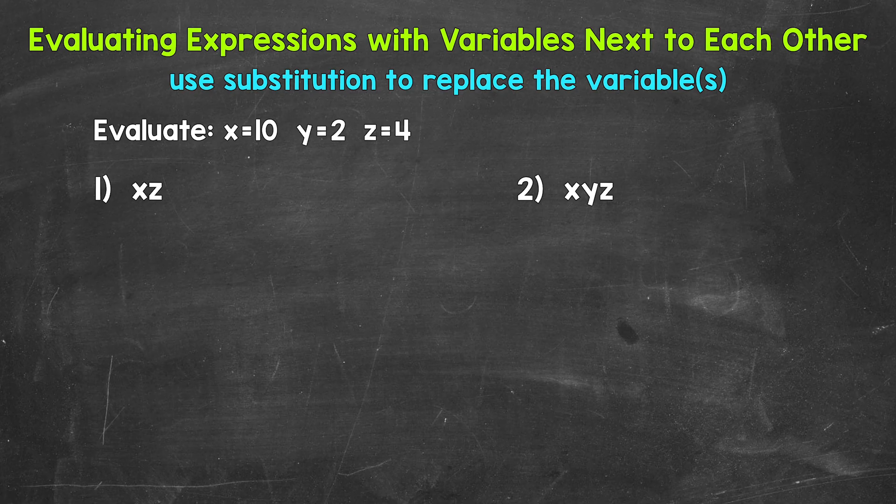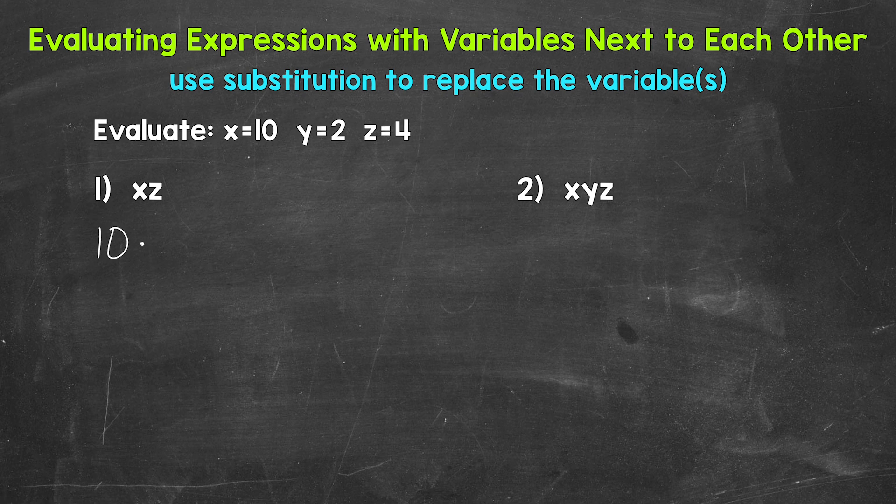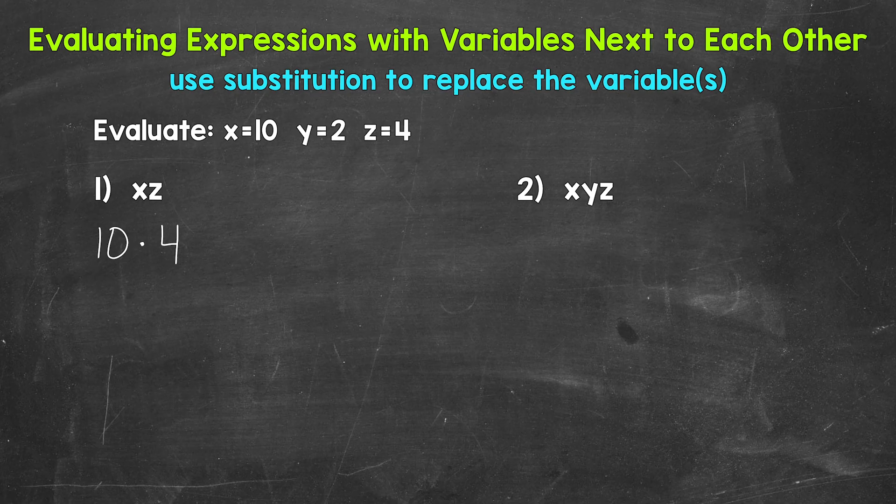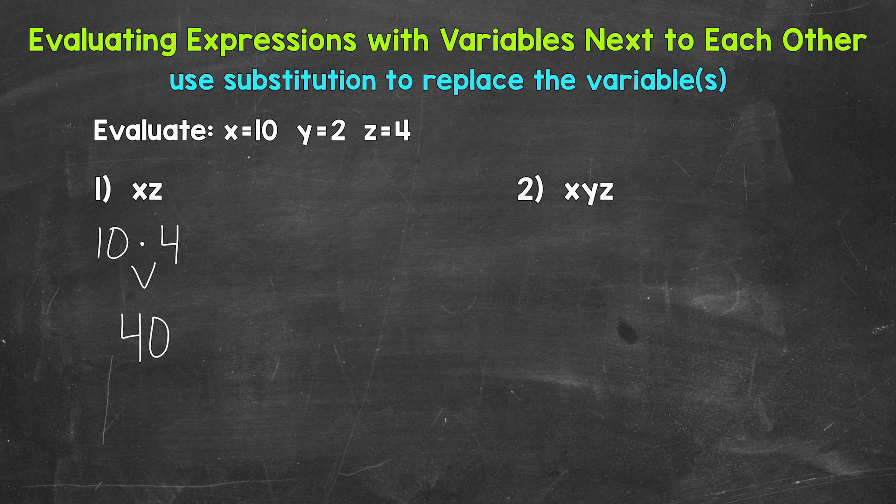So let's plug in 10 for x and 4 for z and rewrite this expression. So 10 for x times 4 for z. Now we can evaluate. So let's figure out what this equals. 10 times 4 equals 40. So the value of this expression is 40, when x equals 10 and z equals 4.